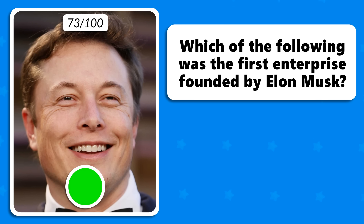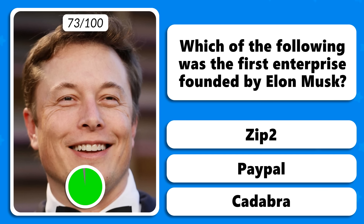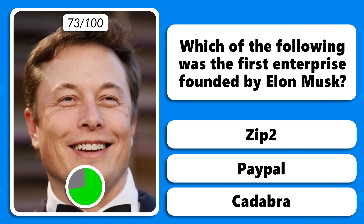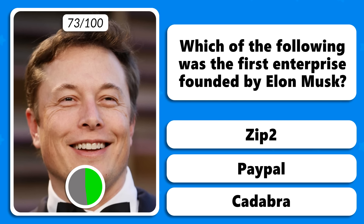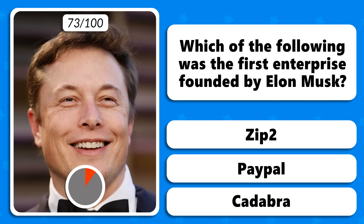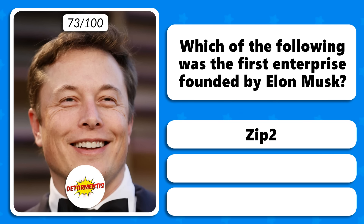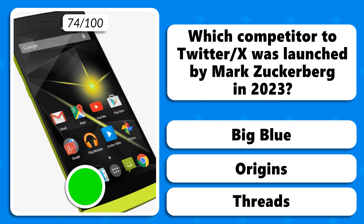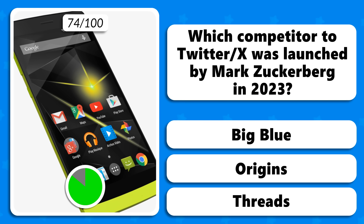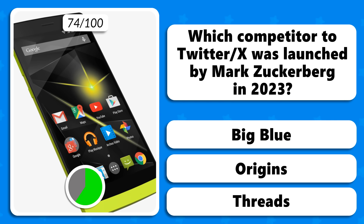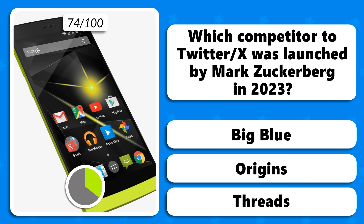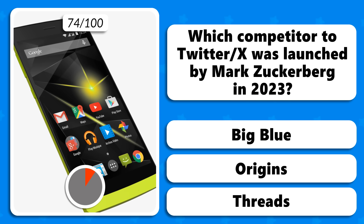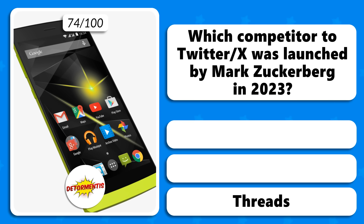Which of the following was the first enterprise founded by Elon Musk — Zip2, PayPal or Kadabra? Zip2. Which competitor to Twitter was launched by Mark Zuckerberg in 2023 — Big Blue, Origins or Threads? Threads.